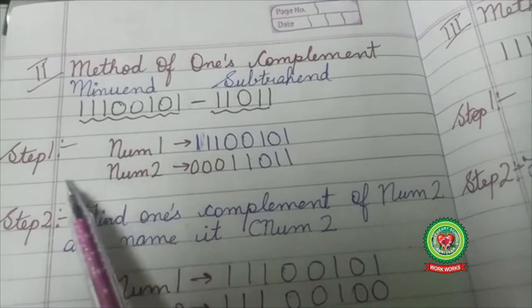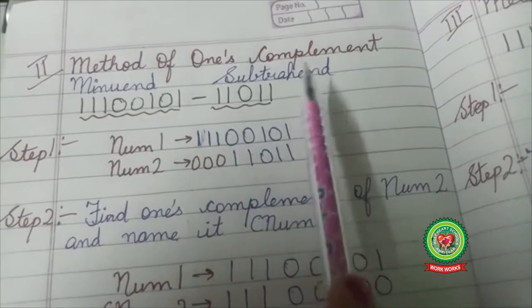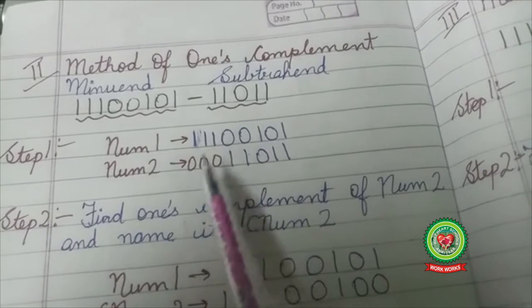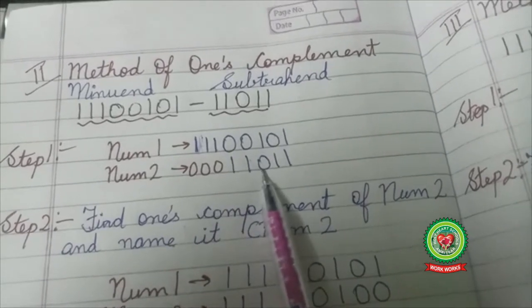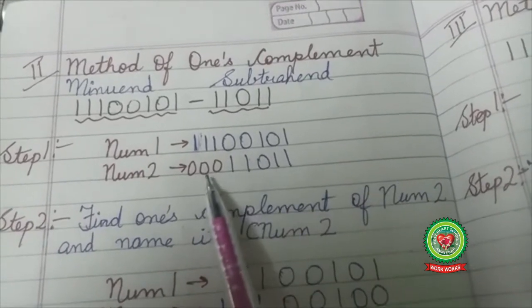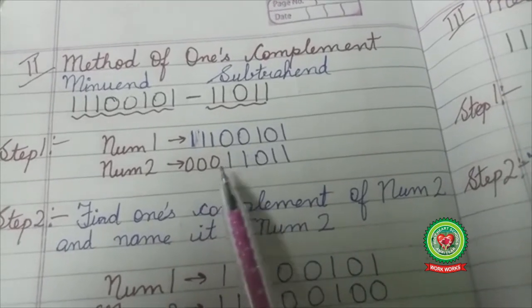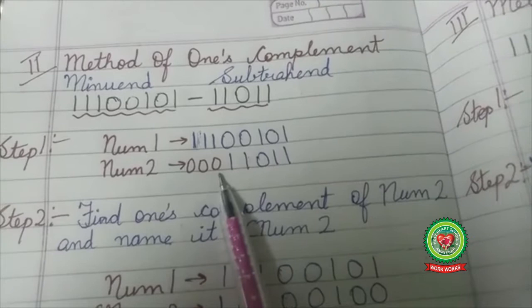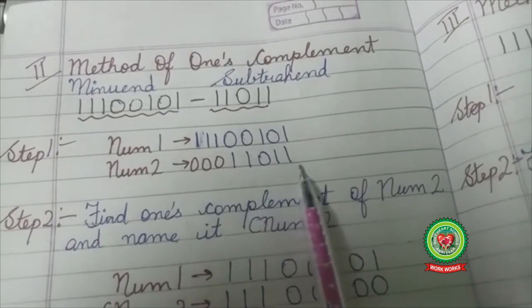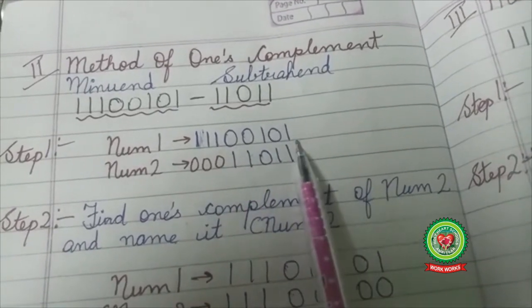Now the first step for one's complement is, I have to make both the numbers equal. It means I have to put the leading zeros to the number to make the number of digits similar to the another number.